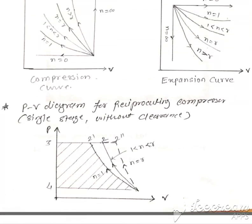Let us look at the compression curves again. The isothermal compression curve is below the polytropic curve, and the isentropic compression curve is above the polytropic curve. In the PV diagram, the start of compression is at high volume and low pressure.